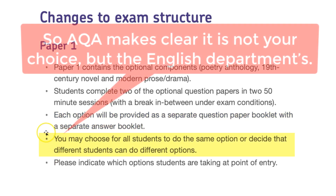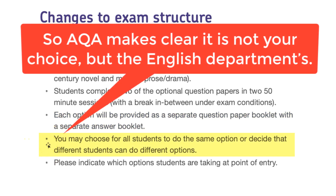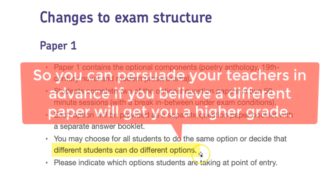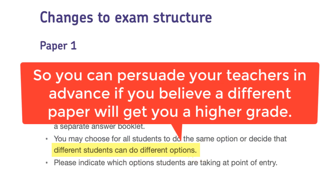Now, this is an instruction for the school which is very interesting for you. You may choose for all students to do the same option, or decide that different students can do different options. Most schools will look at the paperwork required and try to get everybody in the year group to do the same options — that also makes teaching much easier. So if you find that your school has dropped a text that you really, really want to do, you're going to have to do a massive persuasion job.